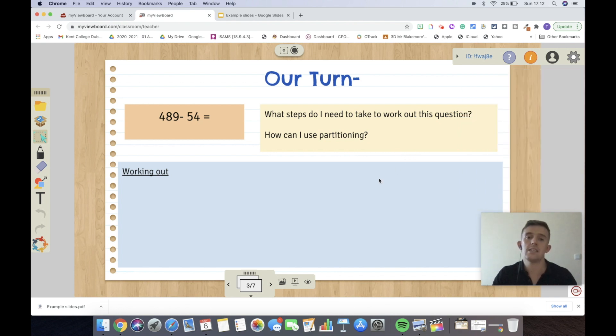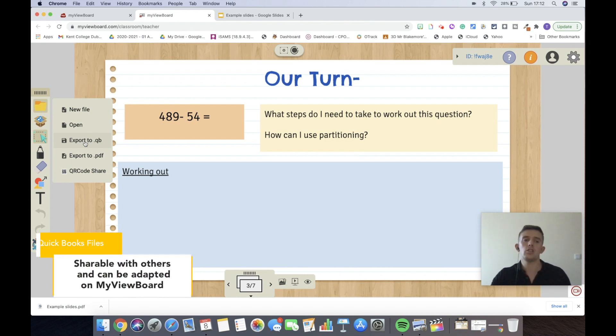Now, the best feature is the collaborative element that is involved with MyViewBoard. Not only can you import things into this, you can also export them too. So if I were to go onto the files here, I can export it as a PDF to share with my learners, but I can also export it as a QuickBook or QB, as this is called. And what this will allow me to do is to share it with learners, and if they have the MyViewBoard software too, then they can import it into their MyViewBoard, and they can also manipulate and add things in too.